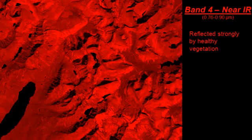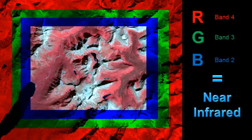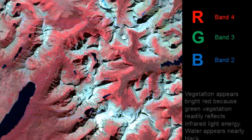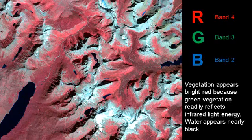A band we're going to use in another combination is the near-infrared band, or band 4. This band is strongly reflected by healthy vegetation. If we assign band 4 to the red channel, band 3 to the green band, and band 2 to the blue band, what we end up with is a near-infrared composite. Vegetation in the near-infrared band is highly reflective due to chlorophyll and appears in various shades of red. Water appears dark, almost black, due to the absorption of energy in the visible red and near-infrared bands.